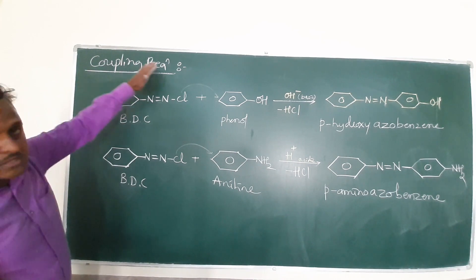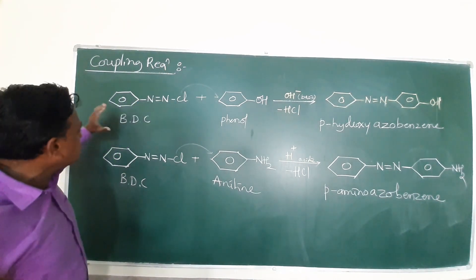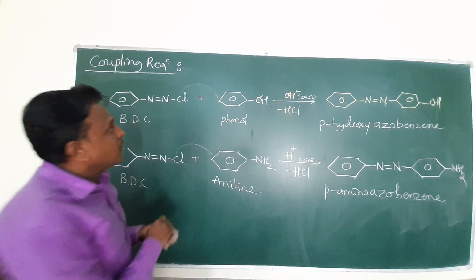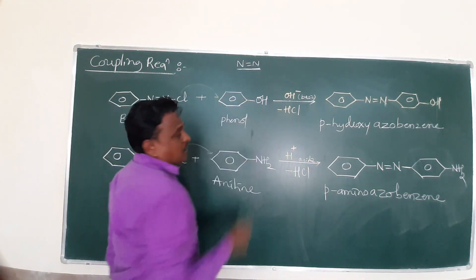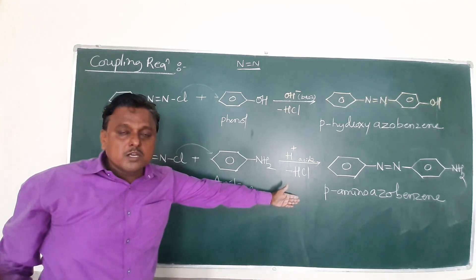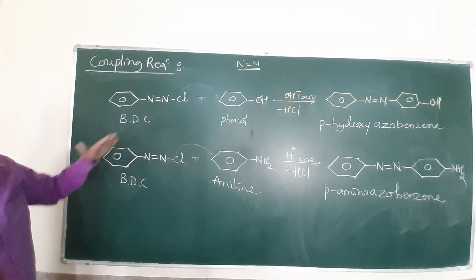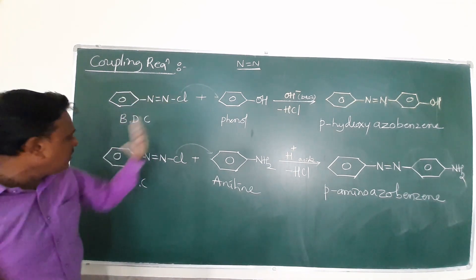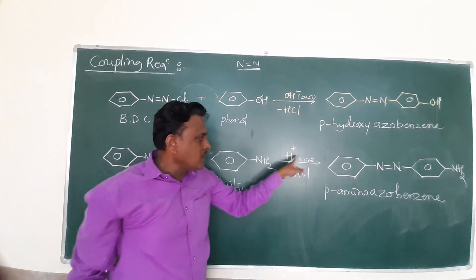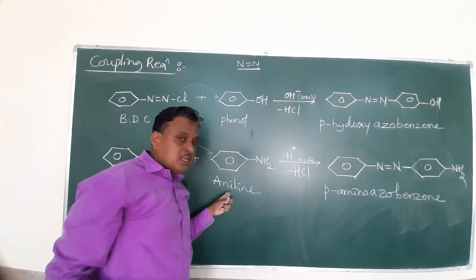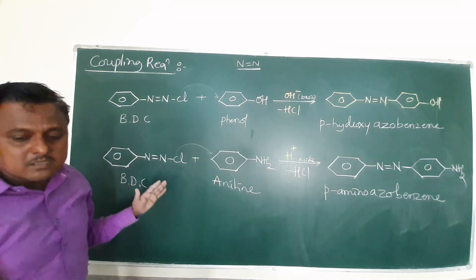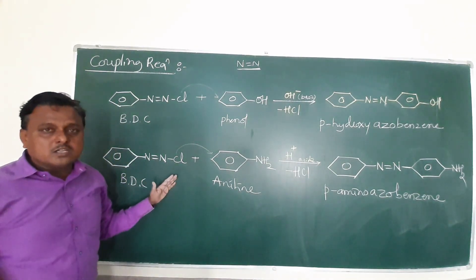These are the two important coupling reactions. In summary: the combination of benzene diazonium chloride with either phenol or aniline forms an azo compound or azo dye. This is the last reaction of the amine chapter. Please practice these reactions more and more and continue to the next unit. Thank you.